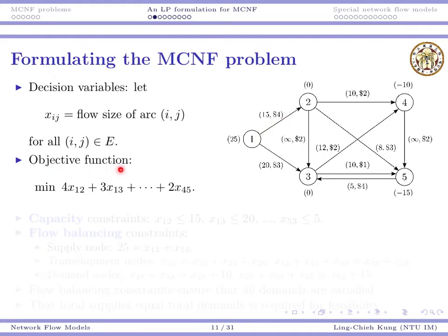With that, our objective function is very clear. It's the minimization problem that we minimize the total cost. For link (1,2), the cost is 4 times x12 because 4 is the unit cost for each unit of flow. And for x13 is 3. So by collecting all the costs on each arc, we can get this minimization objective function.